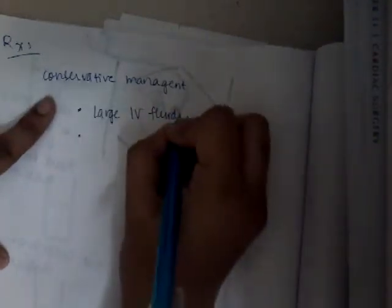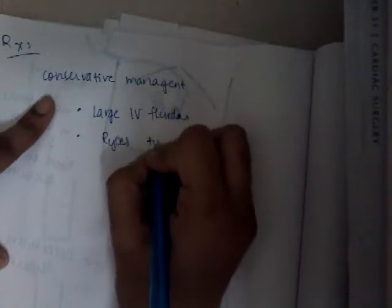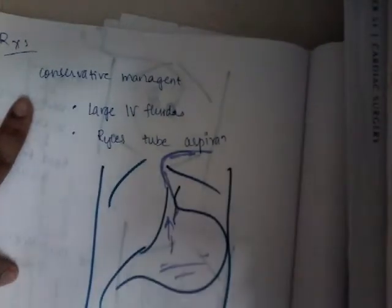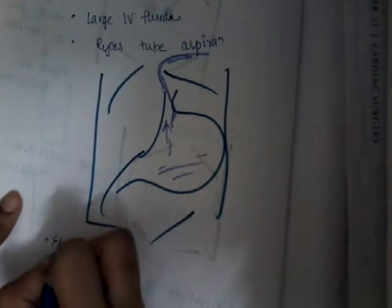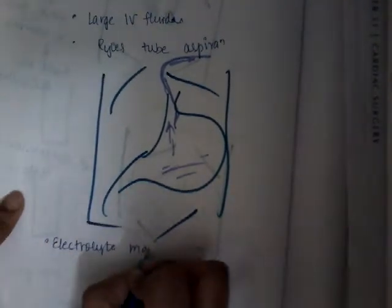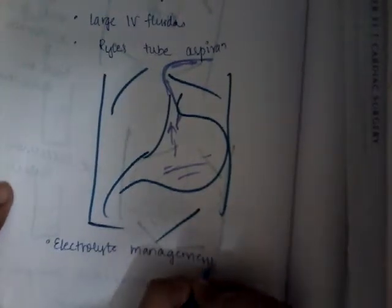The best treatment is conservative management. You give large IV fluids, and then you do Ryles tube aspiration so that all the contents of the stomach are withdrawn, because there are lots of dilated stomach contents. You also conduct electrolyte management.